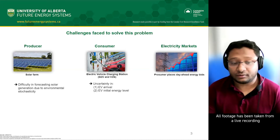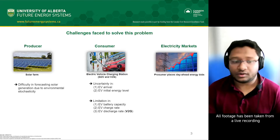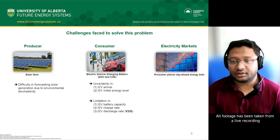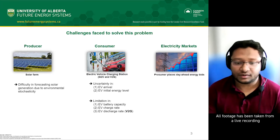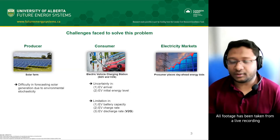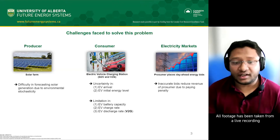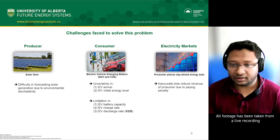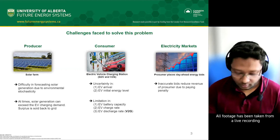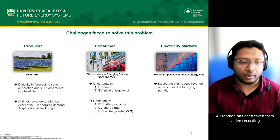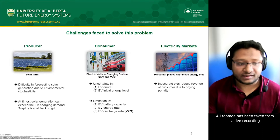There is also uncertainty in when EVs will arrive and what their initial energy level will be. We have limitations in EV battery capacity and charge/discharge rates. Since these electric vehicles support bi-directional charging, they support discharging as well. Adding further difficulty, inaccurate bids placed to the electricity market will reduce the prosumer's revenue by incurring penalties.